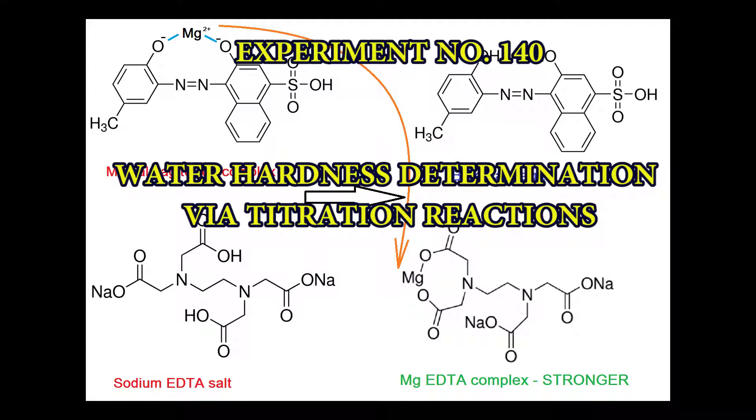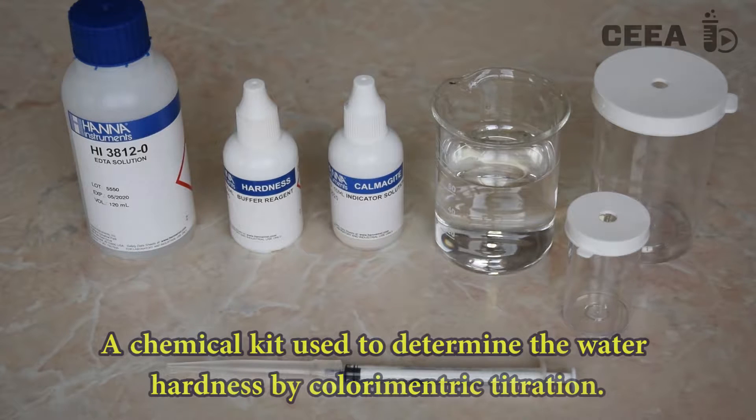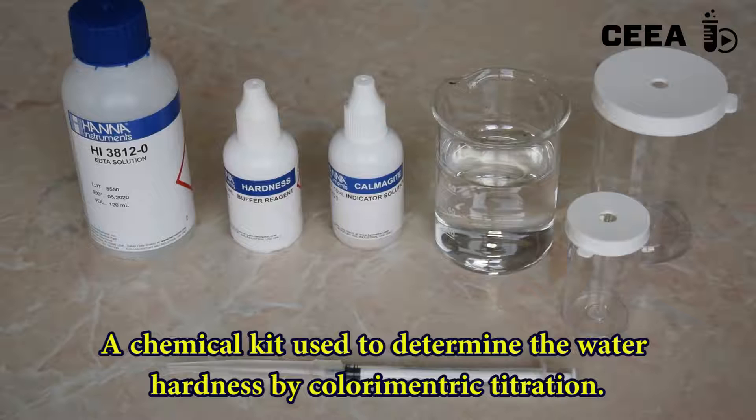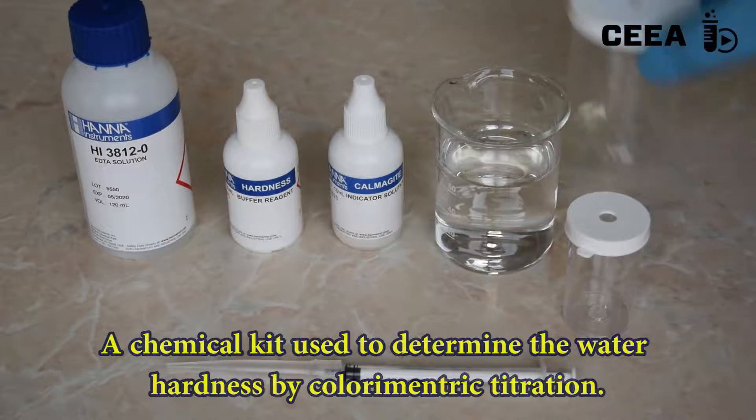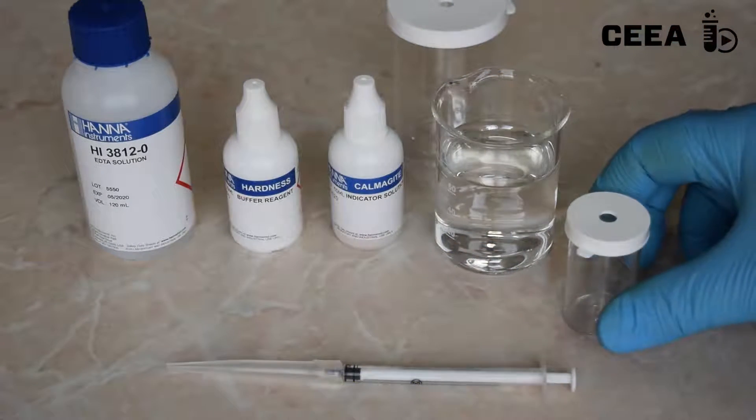Experiment number 126: water hardness determination via titration reactions. Water hardness refers to the content of calcium and magnesium ions present in the water. This content can be measured using commercially available chemical kits allowing to perform colorimetric titration.